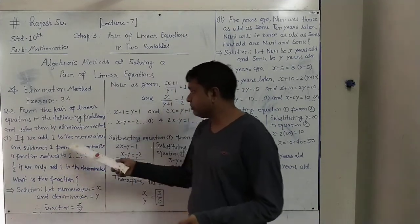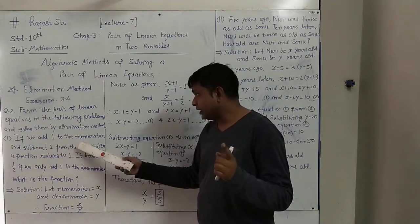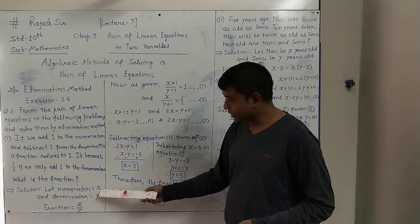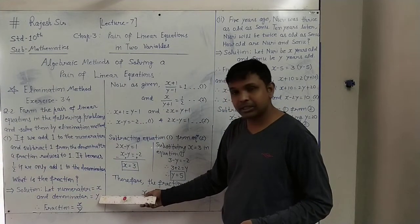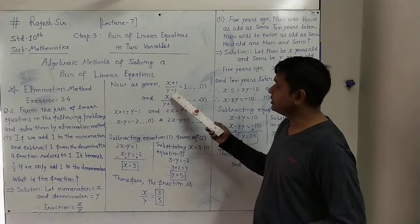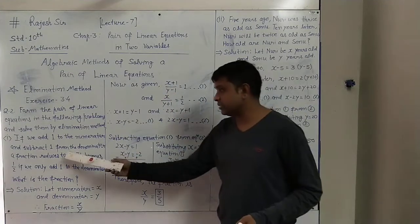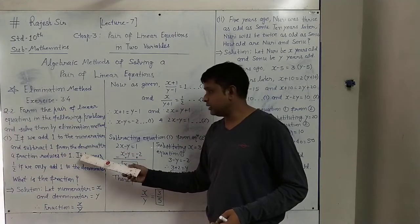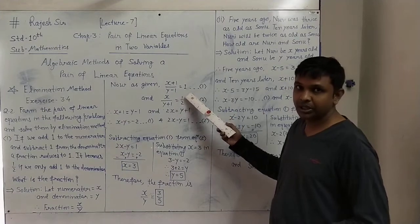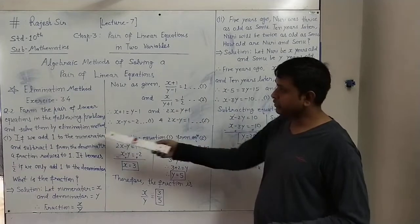Now the first situation: we add 1 to the numerator and subtract 1 from the denominator, so the fraction becomes (x+1)/(y−1). Because 1 is added in the numerator and 1 is subtracted in the denominator, with this condition the fraction's value becomes 1. This gives us the first equation.